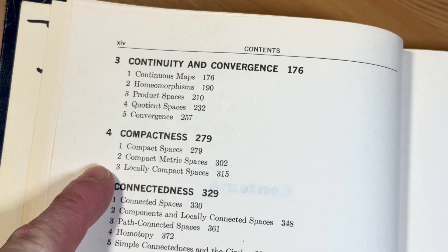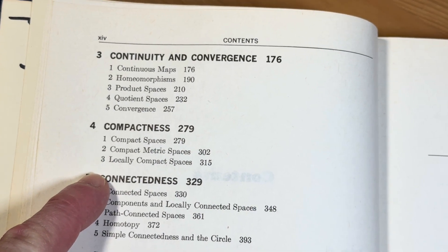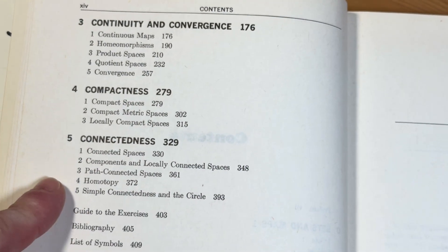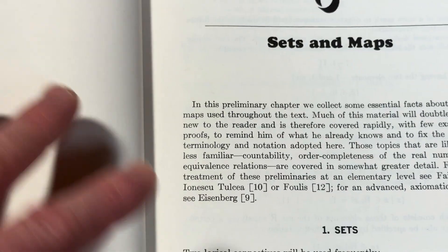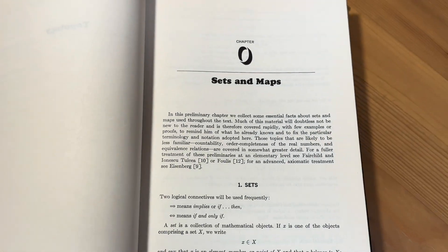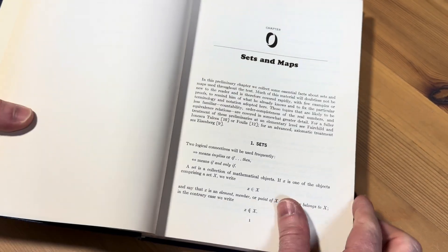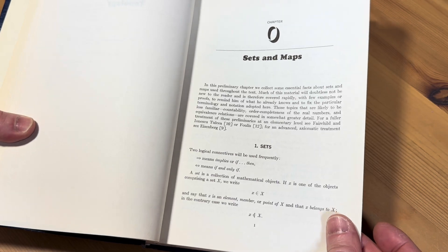Then we have compactness. So compact spaces. Compact metric spaces. And connectedness. And it's a very standard text. I would say it's worth owning if you can get a copy or if you're interested in learning topology. I always think it's good to have as many math books as possible.